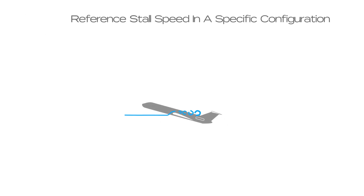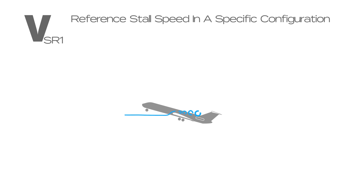Reference stall speed in a specific configuration is represented by VSR1. The specific configuration may be extended gear or extended flaps.